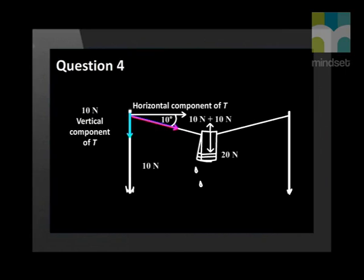Vector T is the tension in the wire. T has two component vectors: a vertical component of 10 newtons and a horizontal component that you must work out. The vertical downward component of 10 newtons is caused by one half of the weight of the towel. The other half of the towel's weight causes another vertical component at the other end of the wire.